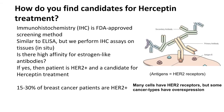The first question is how do we find candidates who we can actually treat with Herceptin? The way we do that is with an FDA-approved test called an immunohistochemistry assay. Similar to ELISA, we essentially take a biopsy of a tumor and subject it to antibodies. These antibodies will have a particular affinity for receptors called HER2. HER2 is a receptor expressed on healthy cells, but certain types of cancer have overexpression of HER2.